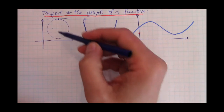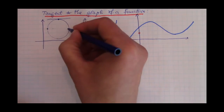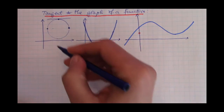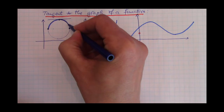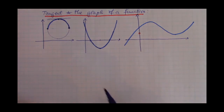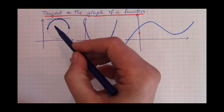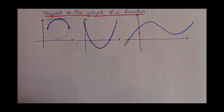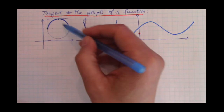The circle is not the graph of a function because the vertical line test fails. So let's restrict ourselves to the upper half of the circle — now the upper half is the graph of a function. If we look at the same definition of a tangent — a line that intersects this half-circle at one point — well, we don't get only one such line.